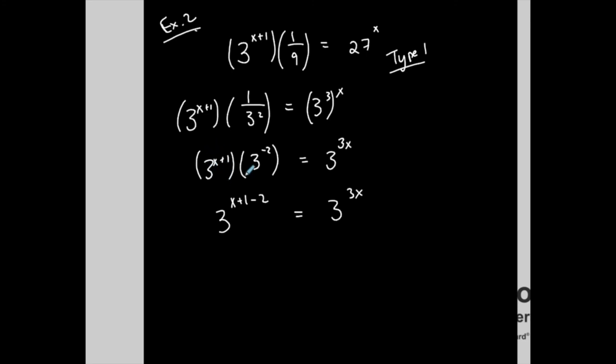3 to the x minus 1 is equal to 3 to the 3x. So I had to do a little manipulation to be able to get a single term on the left and a single term on the right.